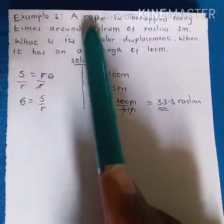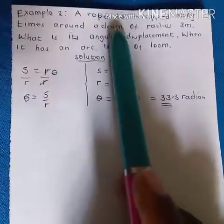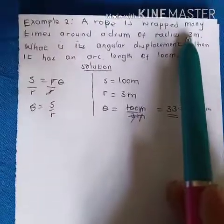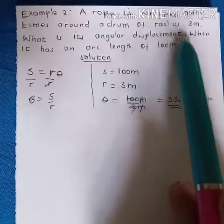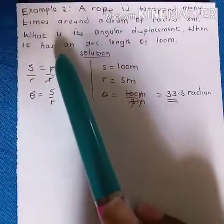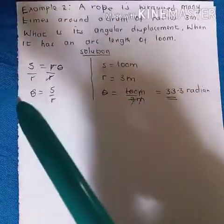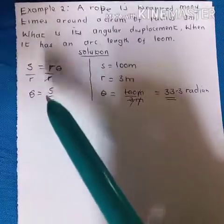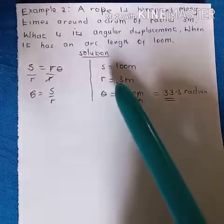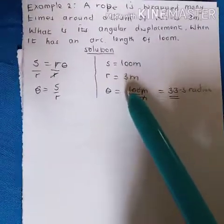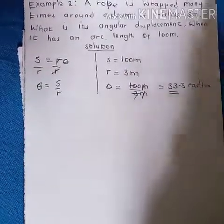Example 2: A rope wrapped many times around a drum of radius 3 meters with an arc length of 100 centimeters. What is its angular displacement? Converting 100 centimeters to 1 meter, we use S equals r theta. S equals 10 meters, r equals 3 meters. Therefore theta equals 10 divided by 3 equals 3.3 radians.